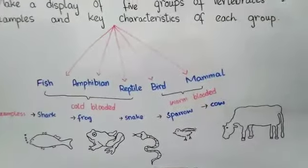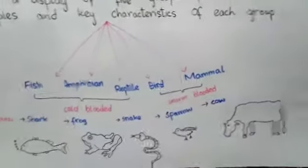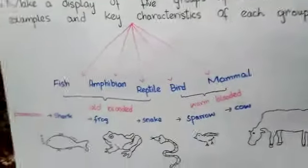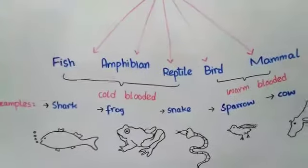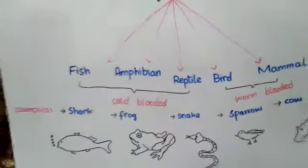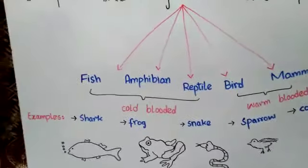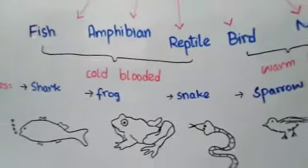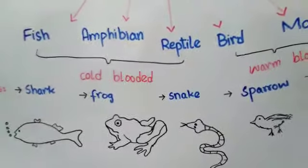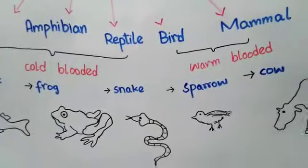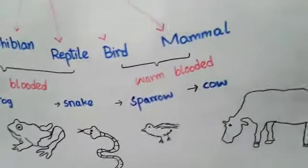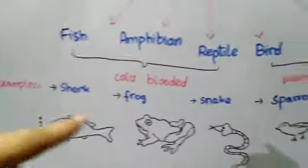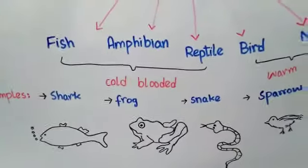Another key characteristic is how they breathe — how they respire. Fishes do not have lungs; they breathe through gills in the water. Amphibians breathe through both their skin and lungs. Reptiles breathe through lungs, similar to us. Birds and mammals also breathe through lungs. So the main difference is that fish use gills, amphibians use both skin and lungs, while reptiles, birds, and mammals all breathe through lungs.